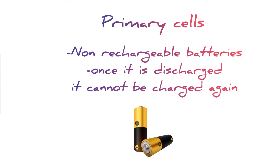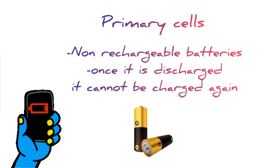Primary cells cannot store energy once they have lost their chemical reactants. However, if a battery can be recharged once it has been discharged, it is called a secondary battery. Secondary batteries, like mobile batteries, can be recharged because the chemical reaction within them is reversible.